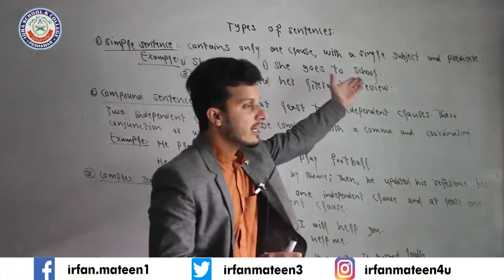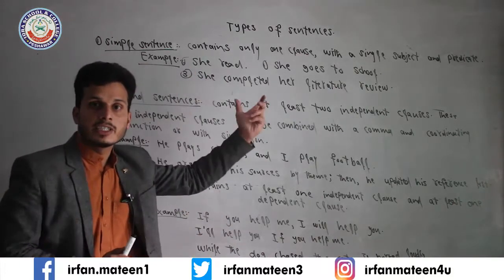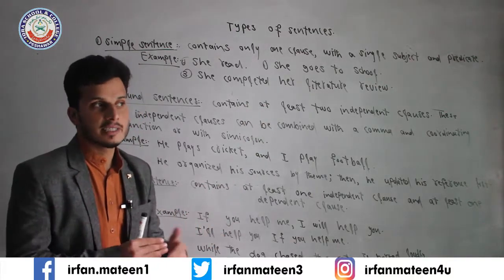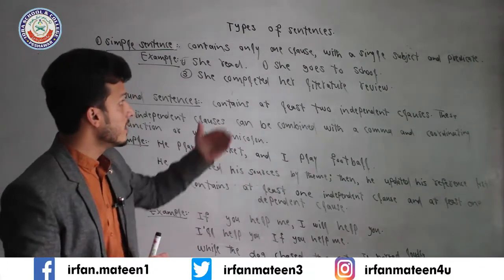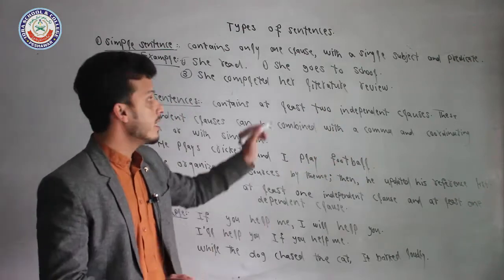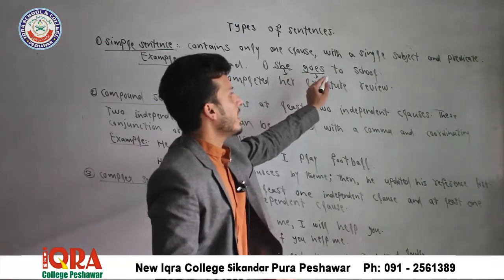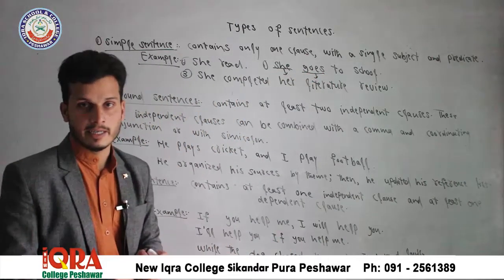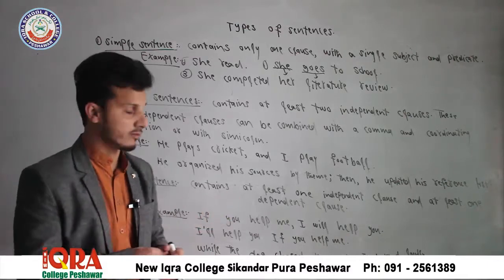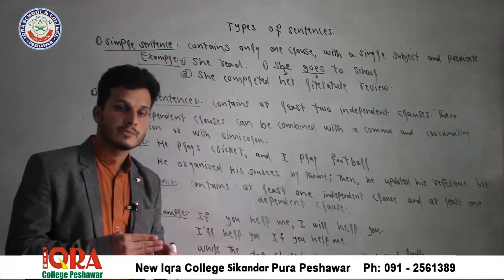One clause with a single subject and a predicate. To example dekhein: 'She reads' — woh parhti hai — to humein complete idea milta hai, aur simple sentence bhi hai, subject hai aur verb hai. Isi tarah second example: 'She goes to school' — woh school jaati hai. She kya hai? Subject hai. Goes kya hai? Verb hai. And school object hai. To yeh simple sentence hai.